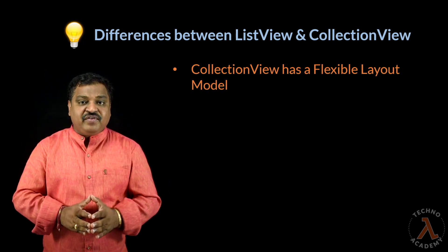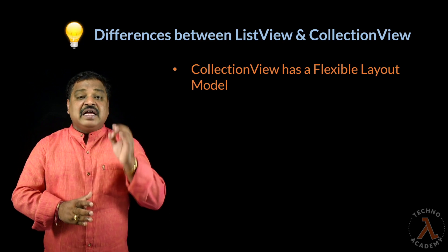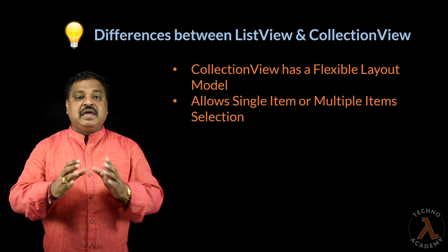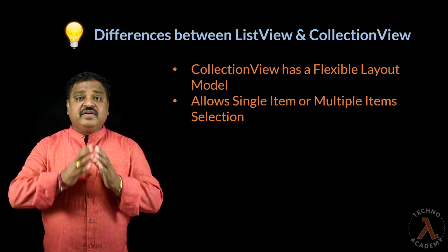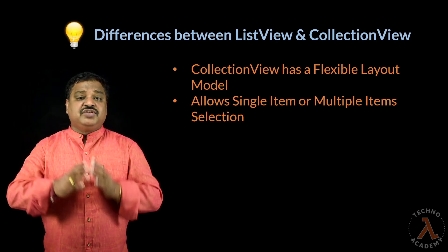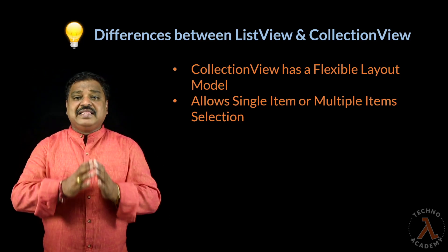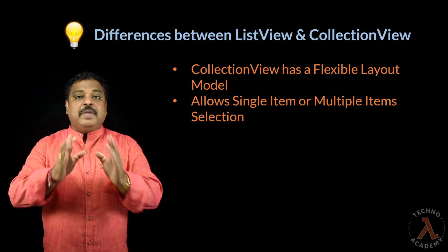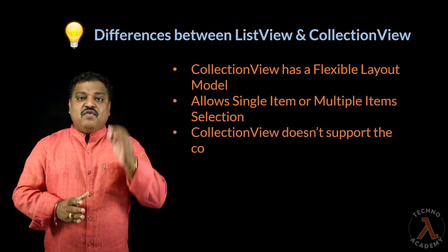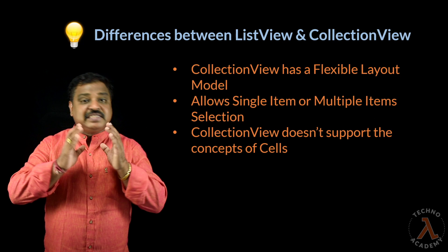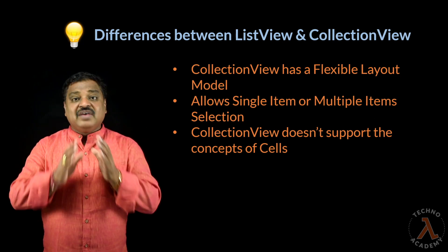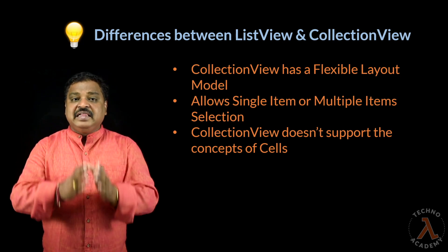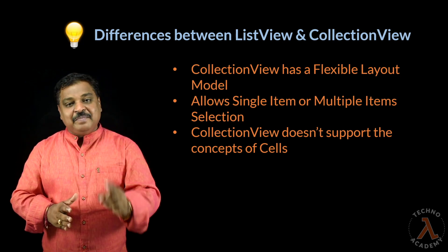Collection View allows the user to select a single item or multiple items. Whenever we used to display data within ListView, we usually take the support of TextCell, ImageCell, or ViewCell. But when working with Collection View, we don't have a concept of cells at all. We can directly define the appearance for each item of data in the list within the DataTemplate itself.